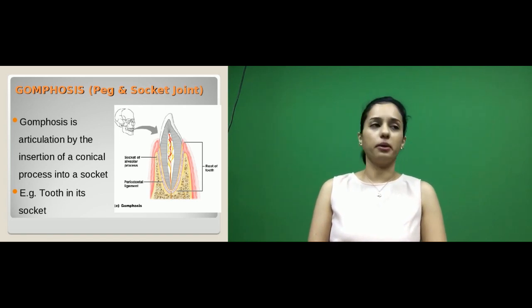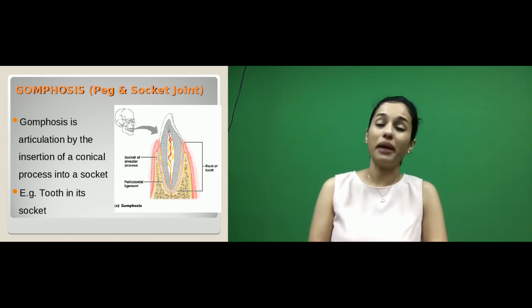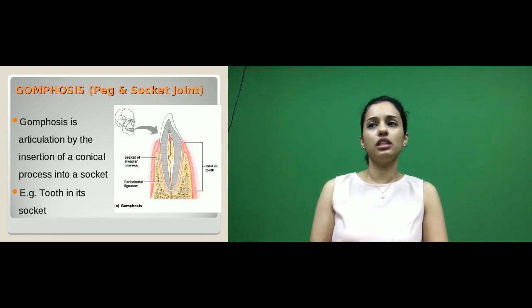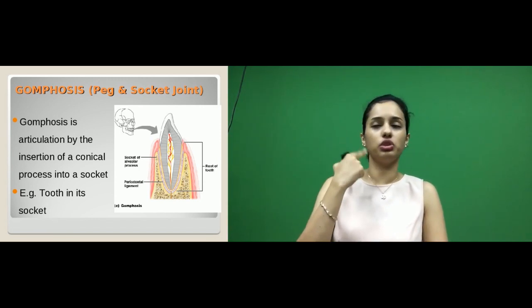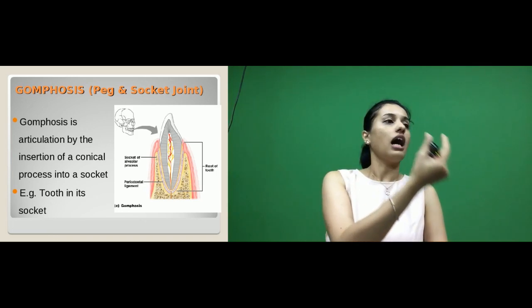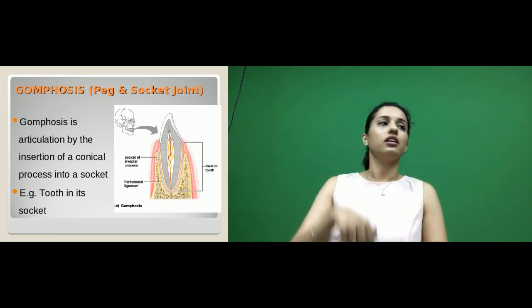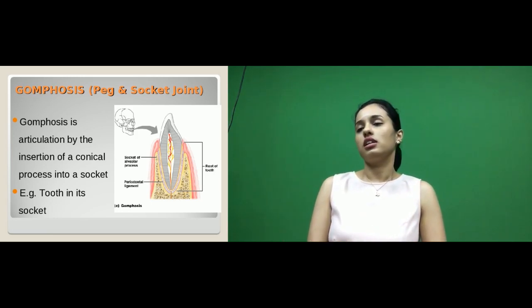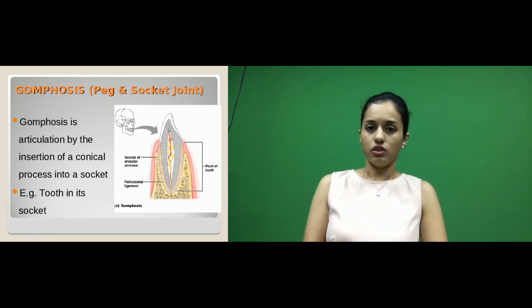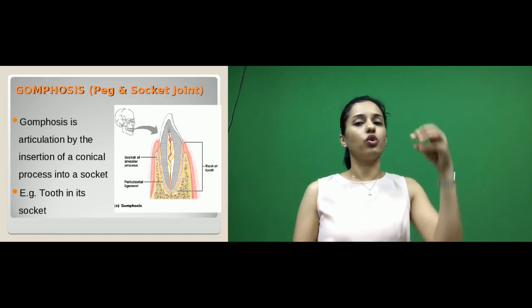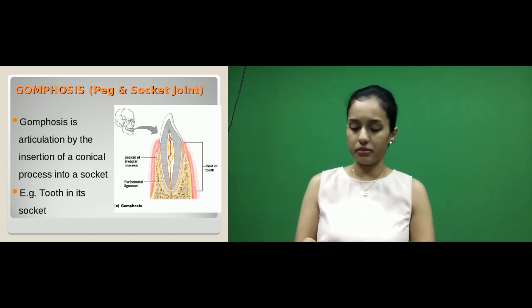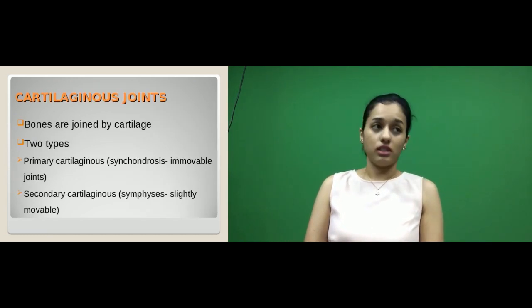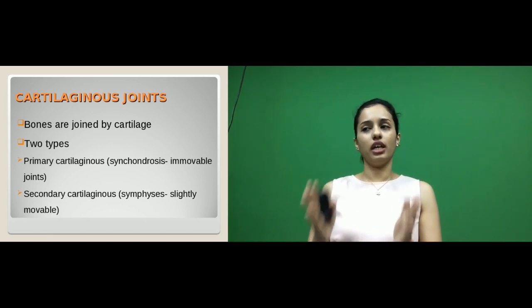Gomphosis is the other type of fibrous joint, also called peg and socket. This type is found within the oral cavity, between the tooth and the gums. The tooth acts like a peg and the groove formed by the gums acts like a socket. The articulation is by insertion of a conical process — the tooth — into the socket formed by the gums.